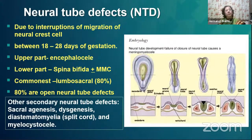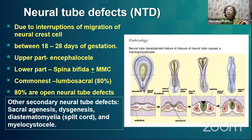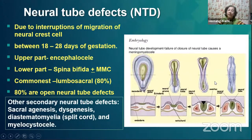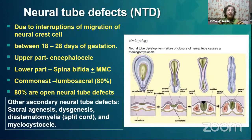Going back to basics: meningomyelocele is a type of neural tube defect occurring due to interruptions in migration of the neural crest cells. In the first four weeks the neural tube develops, closes on itself, and fuses. If there is failure to fuse at the upper part of the tube, it may lead to encephalocele; if it happens at the lower part, it may lead to spina bifida with or without meningomyelocele. The commonest site of defect is lumbosacral, and it may be associated with other neural tube defects like sacral agenesis, diastematomyelia (split cord syndrome), and others.